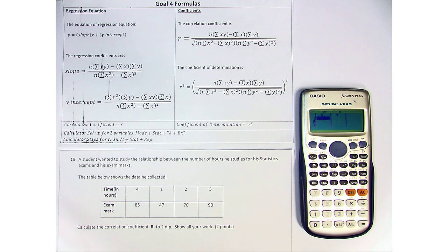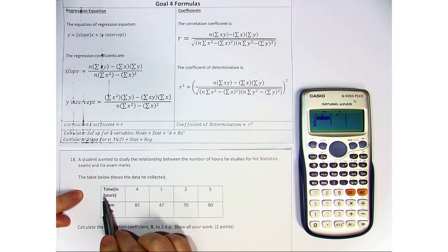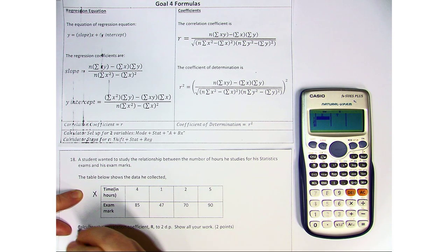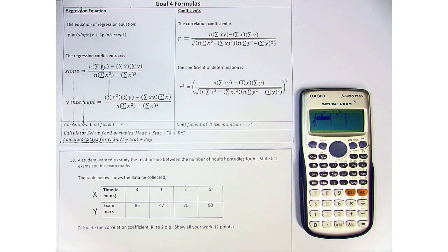Now which one would be x, our independent variable, and which one would be y? In this case, the time that he spent studying would be our independent variable, and what he earned would be dependent on the amount of hours that he studied.